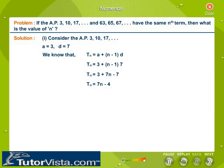Therefore, Tn is equal to 7n minus 4. Let this be equation 1.